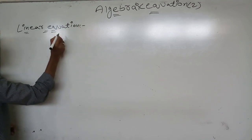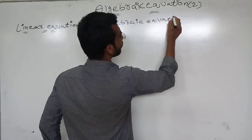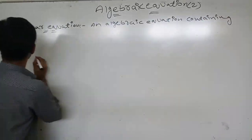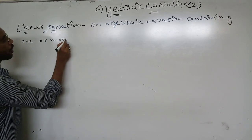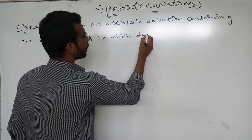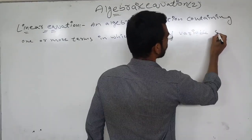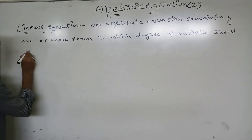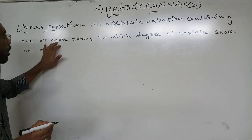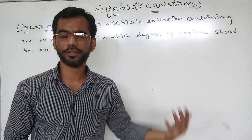First, linear equation. A linear equation is an algebraic equation containing one or more terms in which the degree of the variable should be one. We have already seen what degree means in the previous video.